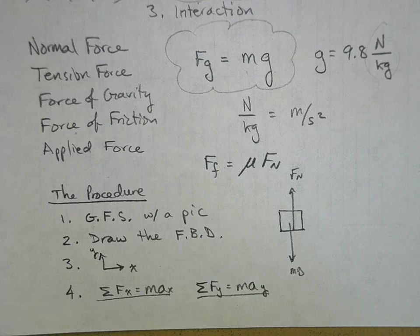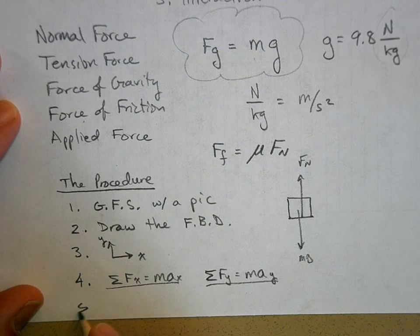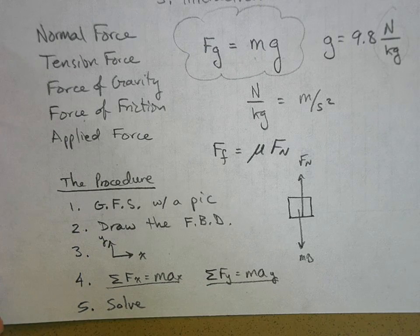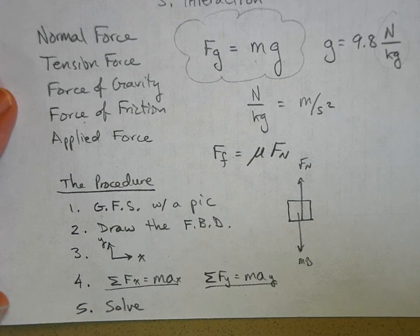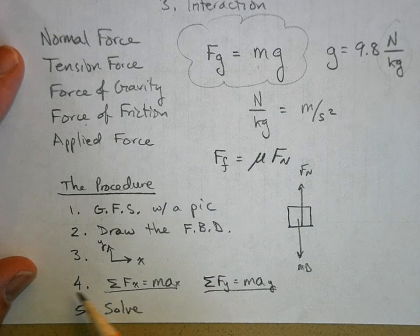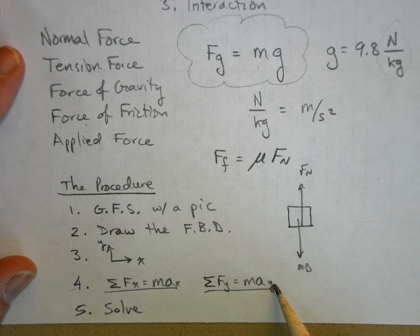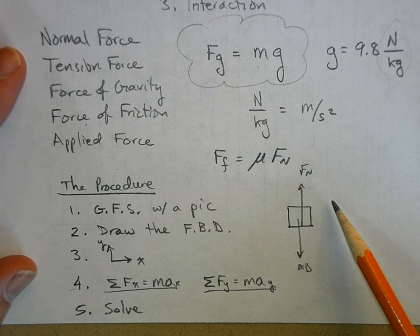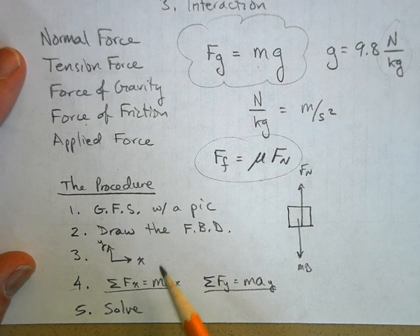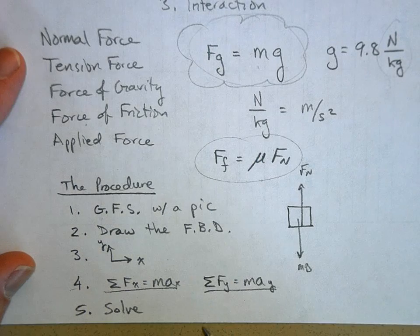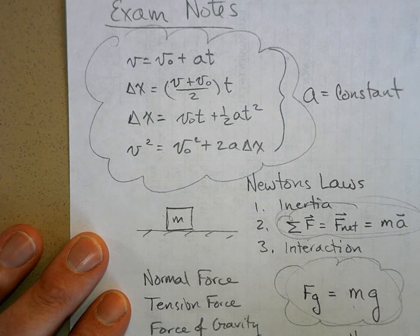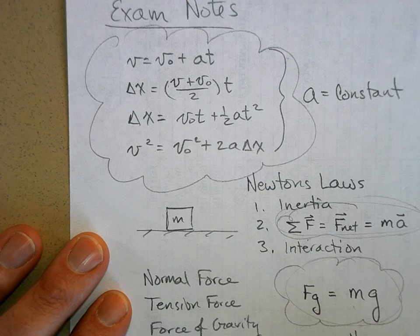And then step five is just solve for your unknown, whatever it happens to be. And if you have these equations—the step four equations constructed properly—if you drew the free body diagram correctly, and if you know the relationship between friction and normal force and gravity and mass, and you know the kinematic equations so that you can solve for the acceleration, you can solve the problem.